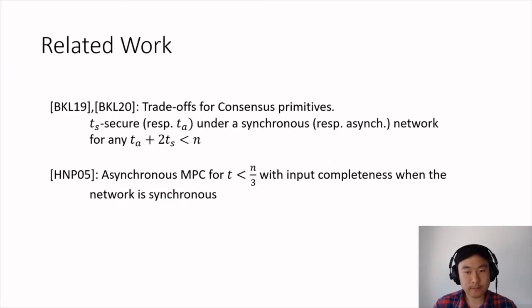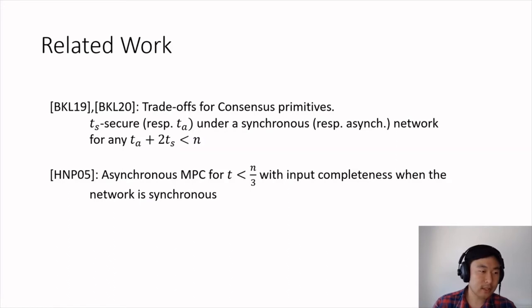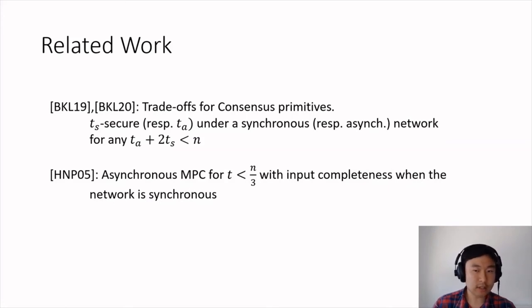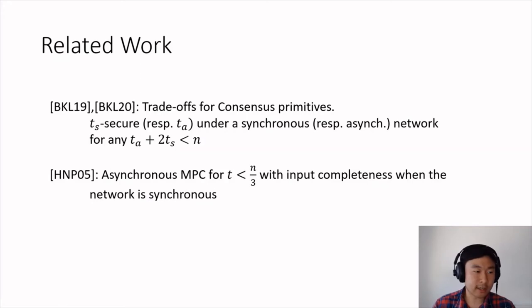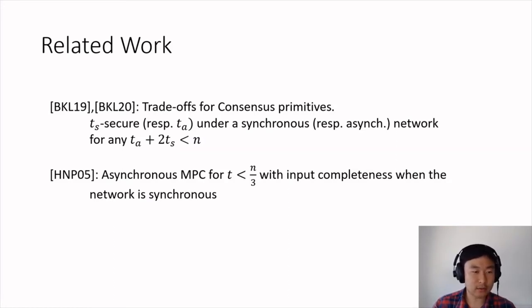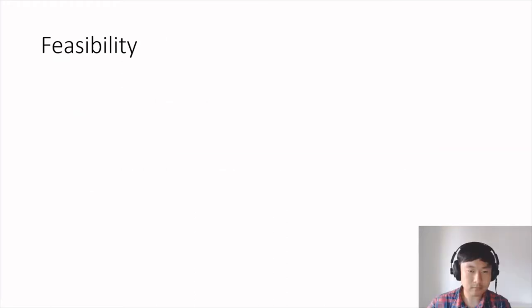We are not the first to ask this question. The literature on hybrid security guarantees is extensive, so we defer detailed related work to the paper. The most closely related work is the recent work by Bloom, Katz, and Loss on achieving such trade-offs for Byzantine agreement protocols, later extended to state machine replication. Also worth mentioning is work by Heert, Nielsen, and Bartosz, which provides an asynchronous MPC protocol for up to n/3 corruptions with the feature that, when the network is synchronous, all inputs are taken into account.